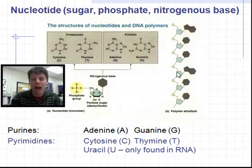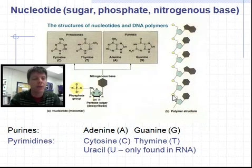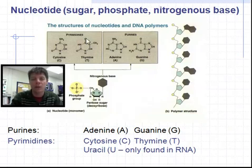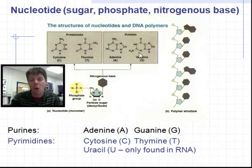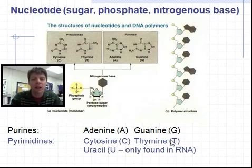Here's one side of a DNA molecule. We can see the backbone is an alternating sequence of sugar — that's deoxyribose — and phosphate group: sugar, phosphate, sugar, phosphate. Attached to every sugar is a different nitrogenous base. The single rings represent pyrimidines like cytosine and thymine; the double ring structures represent the purines, adenine and guanine. Generally we abbreviate: A for adenine, G for guanine, C for cytosine, and T for thymine.